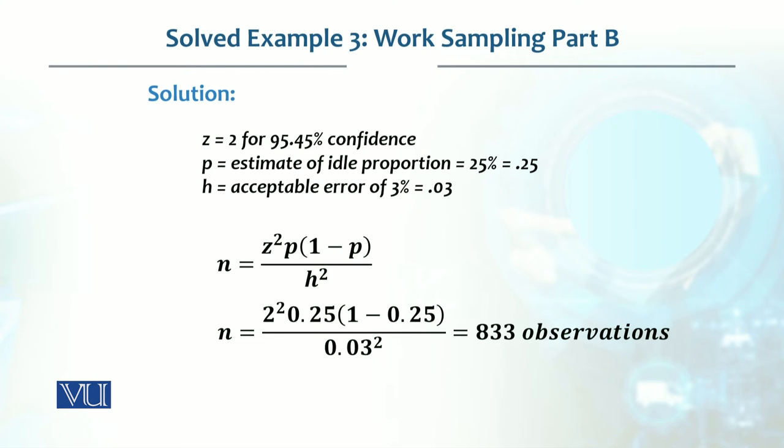which gives us 833 observations. जैसे मैंने पहले कहा था, कि work sampling जो है, वो इतना accurate नहीं होता, तो उसकी accuracy बढ़ाने के लिए, we need more observations, compared to time studies.